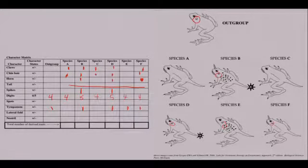Spots are B and E. Lateral fold. I believe that's this line here. So A, B, C, E, and F. And then nostril. So C doesn't have a nostril but everybody else does. So that's what we did here.